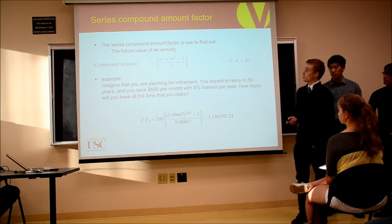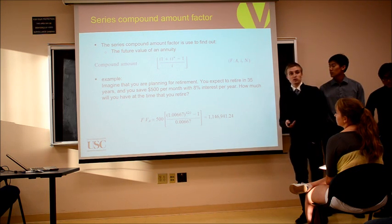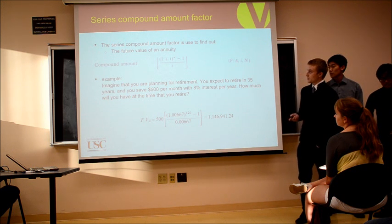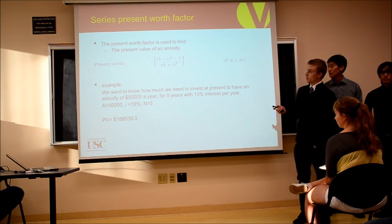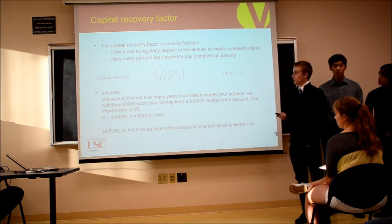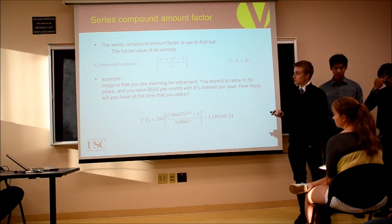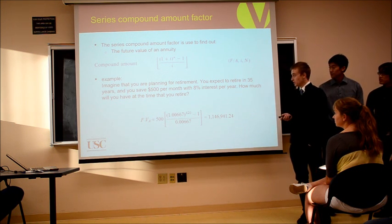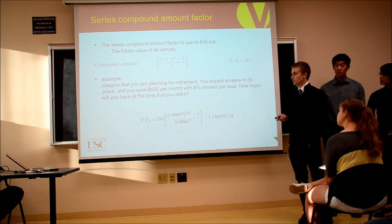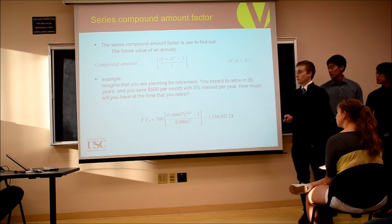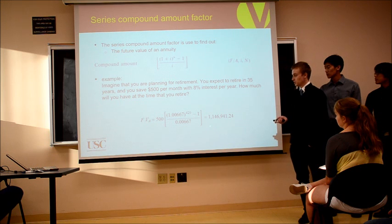Then there's the series compound amount factor, used to find the future value of an annuity. It's very similar to the series present worth factor, except you factor out (1+i)^N, which is equivalent to the present value. For example, imagine you are planning for retirement and expect to retire in 35 years, saving $500 per month with 8% interest per year. The question is how much would you have when you retire? By plugging in these values, we get $1,146,931.